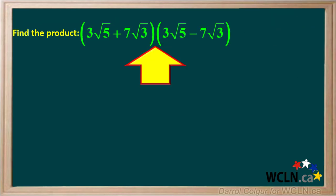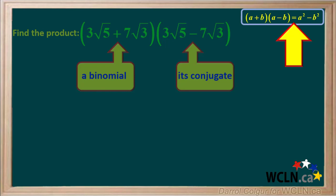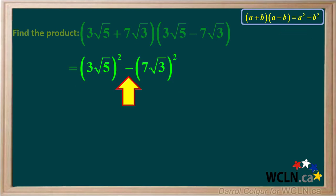We will do an example with radicals. We are asked to find the product of these two binomials. We see that it is a binomial times its conjugate, so we can use the shortcut: a plus b times a minus b equals a squared minus b squared. Using the shortcut, the product will be the quantity 3 root 5 squared minus the quantity 7 root 3 squared.